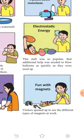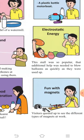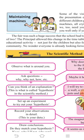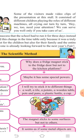Next was fun with magnets. Some children displayed different types of magnets, and visitors queued up — standing in a line — to observe the different types of magnets at work. Then there was the stall on maintaining machines. Some visitors made video clips of the presentation at this stall. It consisted of different children playing the roles of different machines, all crying out in turn: 'Hey, we do need your attention! We can serve you well only if you take care of us!'